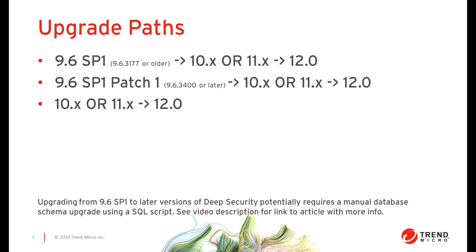To determine the version of your DSM, log into the web console and click on Support in the top right, then choose About from the drop-down menu. The version number on this page correlates to a build number of the software. For customers running version 9.6.3177 or older, refer to the link in the description for upgrading the schema of your database prior to upgrading to 10 or 11 and then 12.